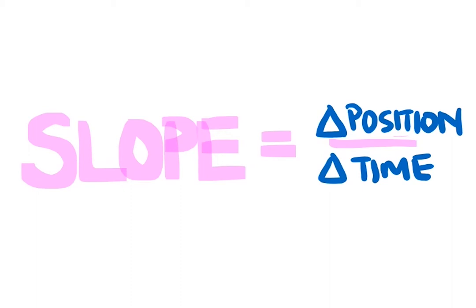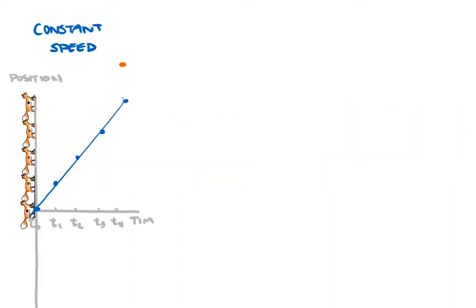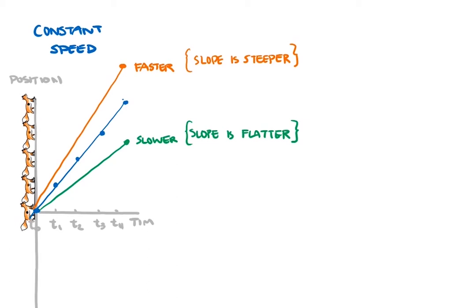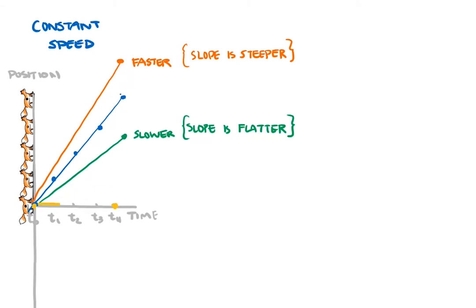Let's put that to work on our constant speed graph. If the fox were moving faster, it would cover more distance by t4, so its ending position would be higher, and since it still reaches t4 at a constant pace, we connect these two points with a line. If the fox were moving more slowly, it would have covered less distance by t4, and the start and end would be connected with a flatter line to represent this constant, slower speed. We can even imagine that a fox not moving at all makes no change to its position as time continues, resulting in a flat line with zero slope.